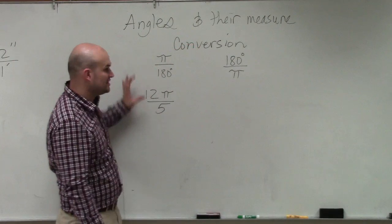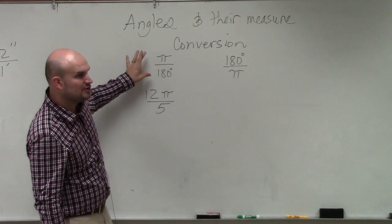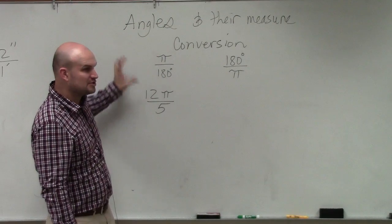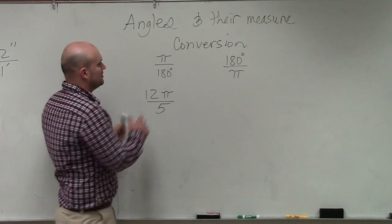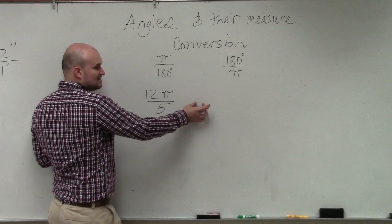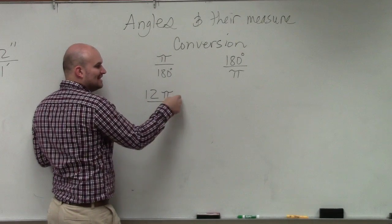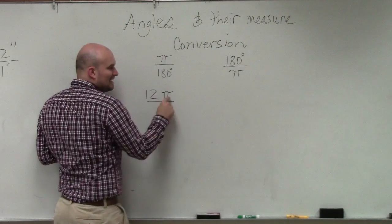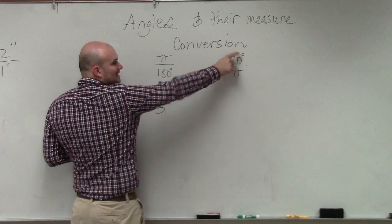So if I multiply a fraction by something that's in different units but the same measure, I'm not actually going to change. I'm just going to convert it to the other unit. So when you want to convert from radians to degrees, what you're going to want to do is eliminate your pi and include a degree measure.